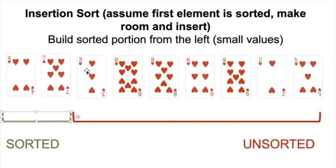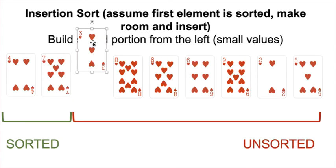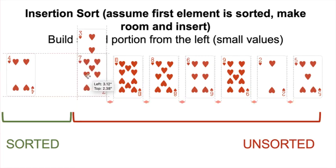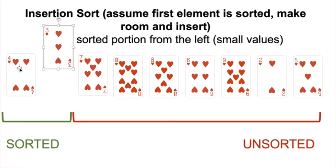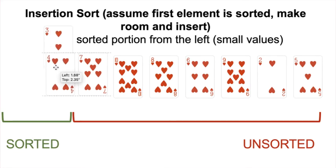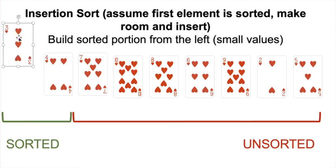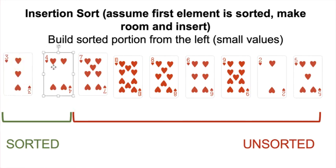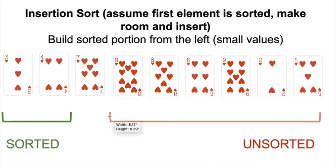Now we do another iteration, starting with the first element in our unsorted portion, which is three. We're trying to find where to insert three in the sorted portion. Is three smaller than seven? Yes. So we've got to move the seven over to make room. Is three smaller than four? Yes. So we've got to move the four over. We're now at the beginning of the array — there are no more cards to check, so the three goes here. This shrinks our unsorted portion by one and grows our sorted portion by one.